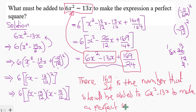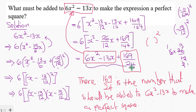But how do we confirm this? Let me convince you that the expression is indeed a perfect square. If it's a perfect square, I should be able to write the entire expression 6x squared minus 13x plus 169 over 24 as some expression to the power of 2. And when I expand that, it should give us back 6x squared minus 13x plus 169 over 24.